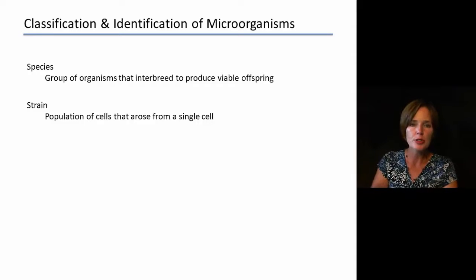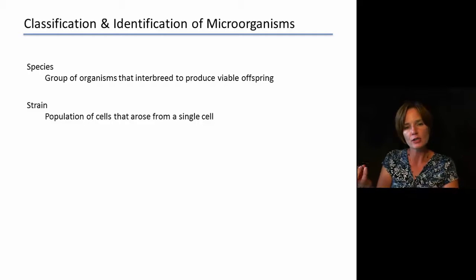That particular definition doesn't apply real well when we're talking about bacteria or other microbes. So with microbes, we tend to use the word strain to really describe the species. And a strain is going to be a population of cells that arose from a single progenitor cell. So that will be kind of our smallest group that we do identify when we are talking about microbiology.